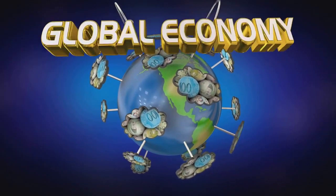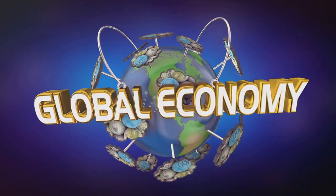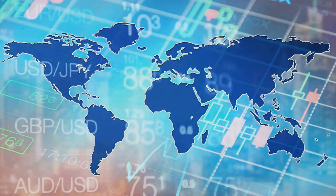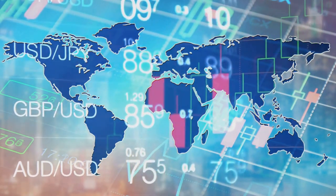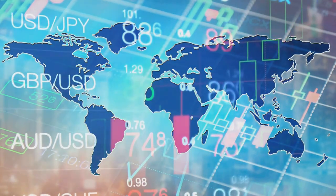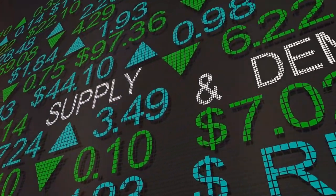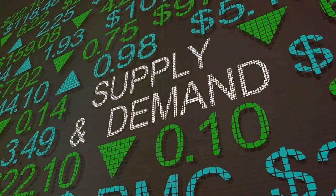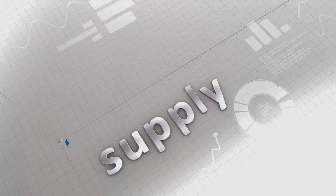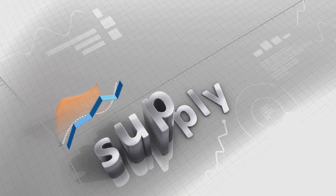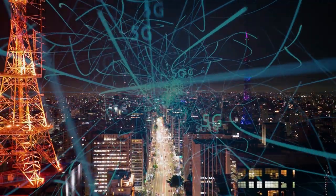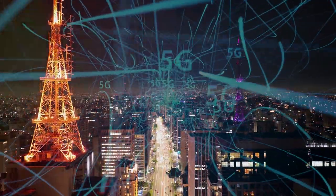Next up, we have global economic conditions. The interconnectedness of today's world means that an economic downturn in one country can have a ripple effect on the capital environment of other nations. Similarly, strong economic performance in a major economy can bolster the capital environment globally. Lastly, we can't overlook market forces — specifically supply and demand. When there's a high demand for capital and a low supply, it can become more difficult to secure funding. On the flip side, when there's a surplus of capital and less demand for it, access to funding can become easier.